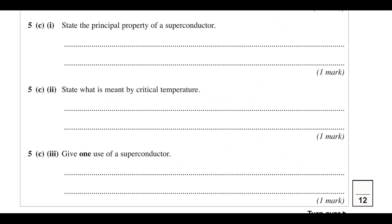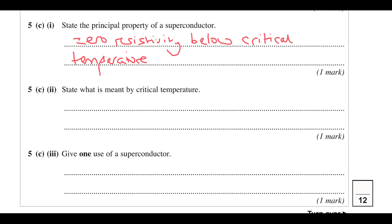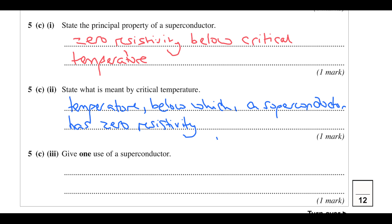That finishes the ohmic conductor question. The principal property of a superconductor is zero resistivity below its critical temperature. The critical temperature is the temperature below which a superconductor has a resistivity of zero, or becomes superconducting. These are just textbook definitions you need to know.